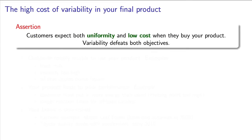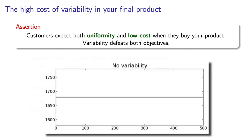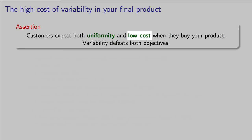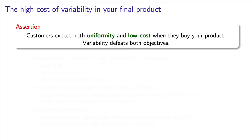At the end of your production line, you have customers. Your customers are expecting a product that is identical every time — they are expecting your process to operate like that flat line. At the same time, your customers also want to pay as little as possible for your product. If your competitor can make the same product for less money, you will go out of business eventually. So we have these competing constraints: meeting customer expectations and keeping the cost of the product low. Variability in any system works against you on both these aspects.